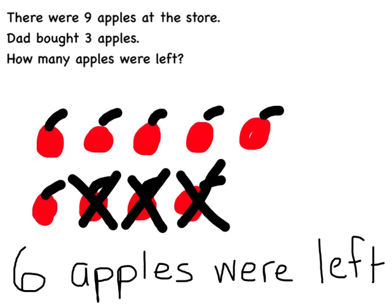So let me see. We started with nine apples at the store, so that's my first number I'm going to write — nine. And we said that dad buying is the same as dad taking things away. So I know this is a takeaway problem. So I'm going to write the symbol for takeaway, which is a minus.